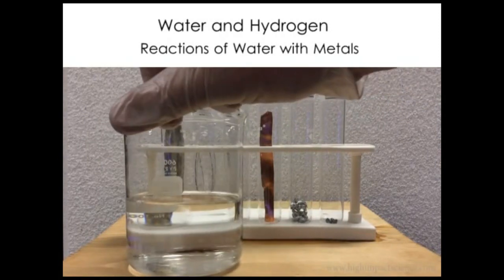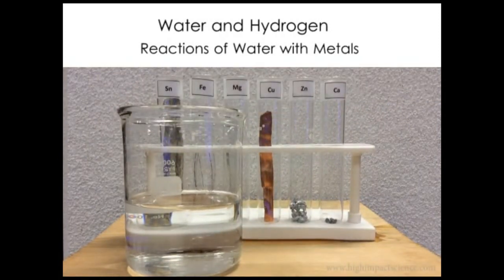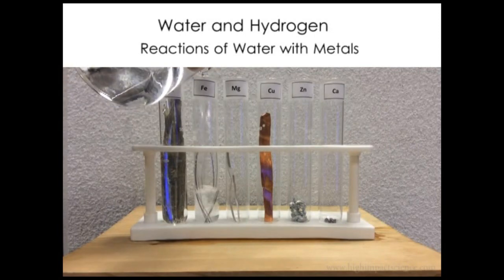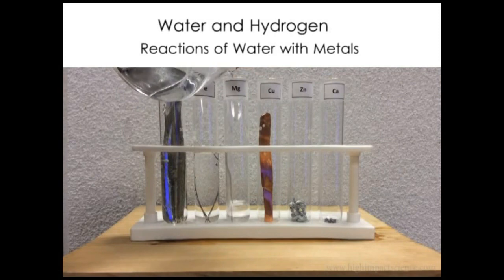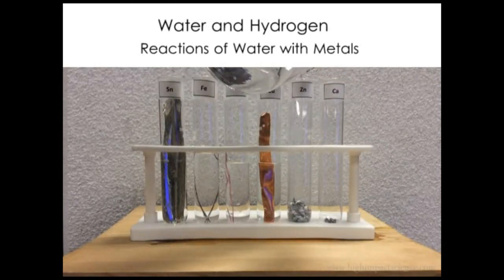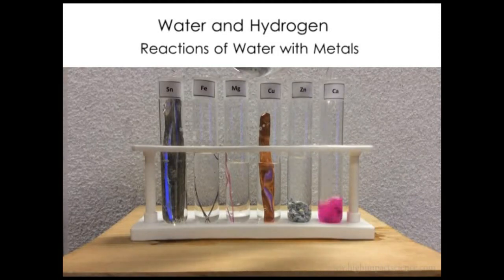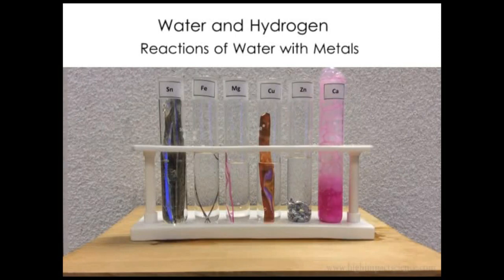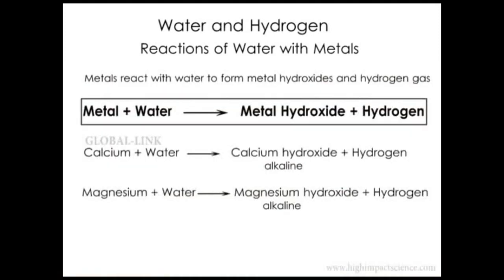Then we pour the water into the test tubes containing our metal samples: calcium, magnesium, zinc, and others. The reaction is already evident in calcium—the solution turns pink indicating it's alkaline. Magnesium is also showing some signs of a reaction. For the others, nothing much can be seen. Generally, metals react with water to form alkaline metal hydroxides and hydrogen gas.